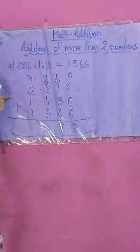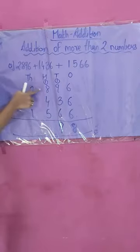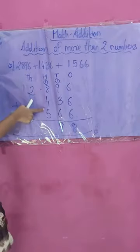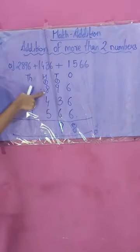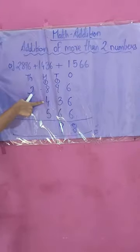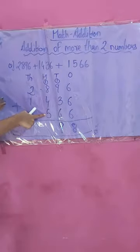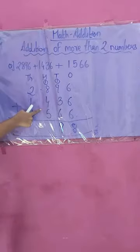As you can see the numbers are not finishing, so we carry over to the next place. Now we add the 100's place: 1 plus 8 plus 4 plus 5. 1 plus 8 is 9, plus 4 is 13, plus 5 is 18. The answer is 18.